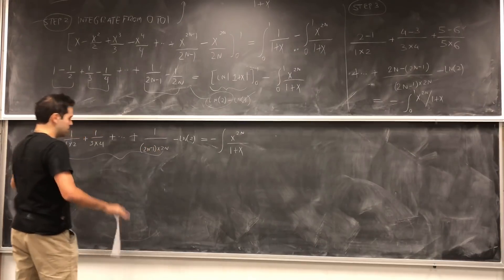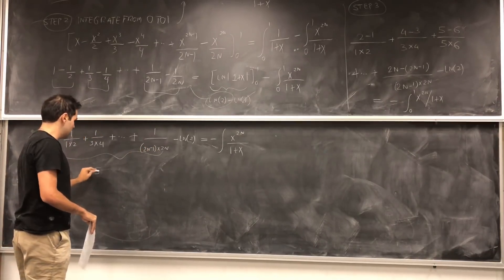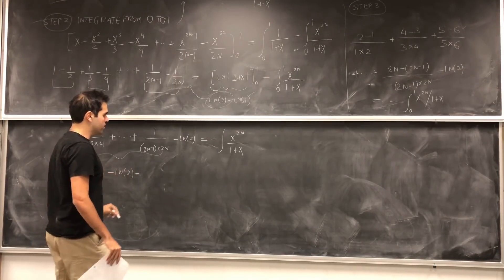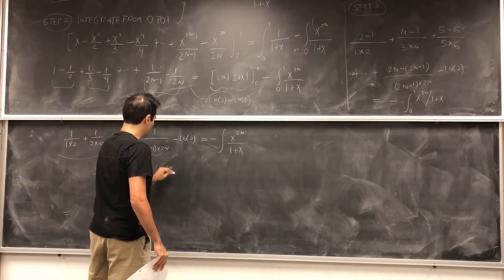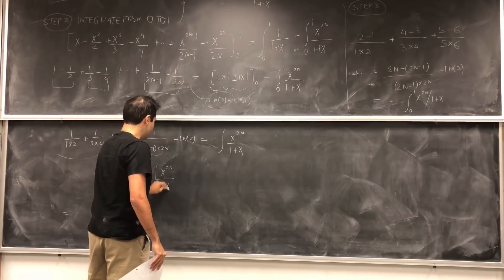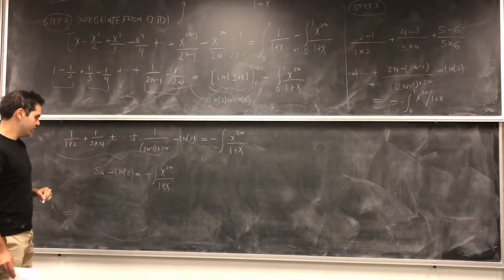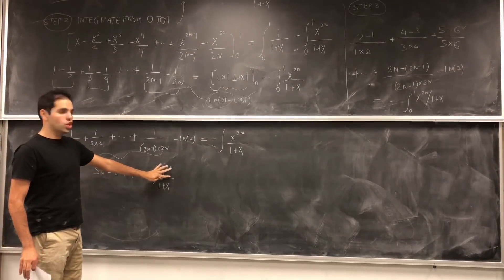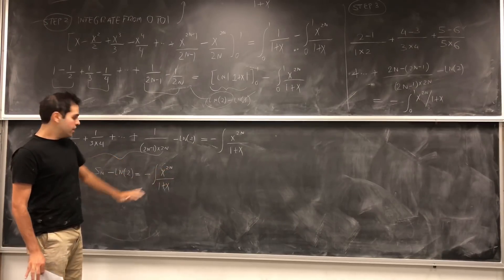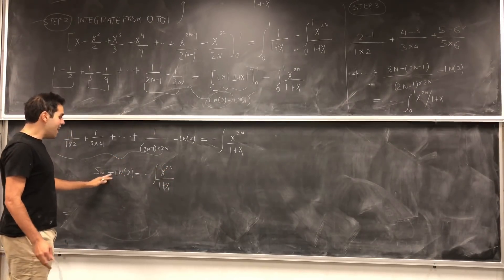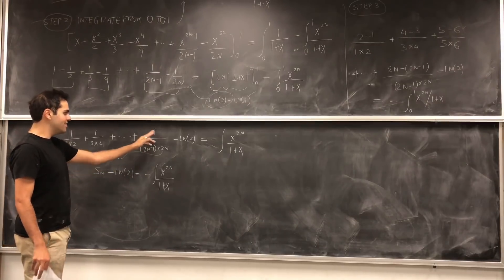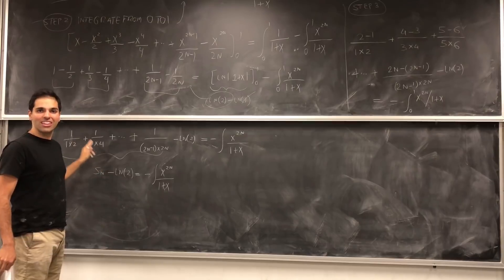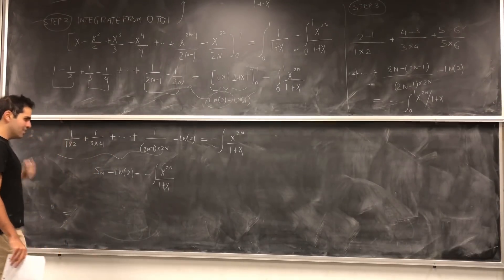Let's call this thing Sn — it's like a partial sum. So, Sn minus ln of 2 equals minus the integral from 0 to 1 of x to the 2n over 1 plus x, dx. Notice: if we somehow show that this integral goes to 0, then in fact Sn becomes ln of 2. But Sn as n goes to infinity is precisely the infinite series that we want.